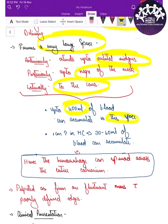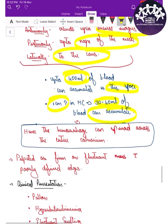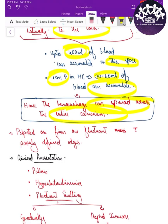That is the need to recognize it and to monitor the child vigorously. One centimeter increase in head circumference will lead to 30 to 40 ml of blood accumulation. Hence the hemorrhage can spread across the entire skull as mentioned.